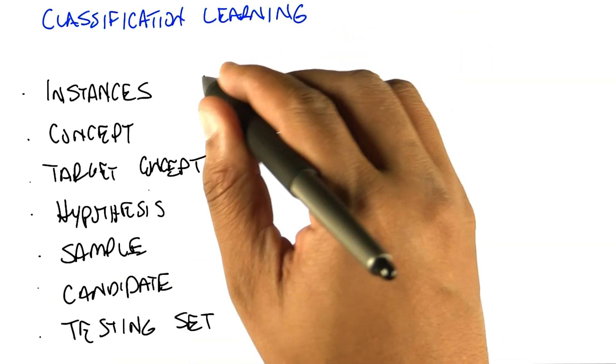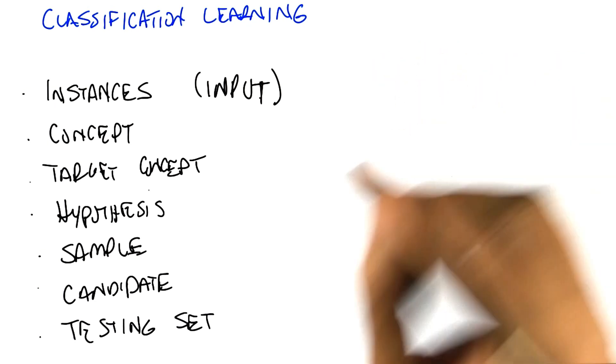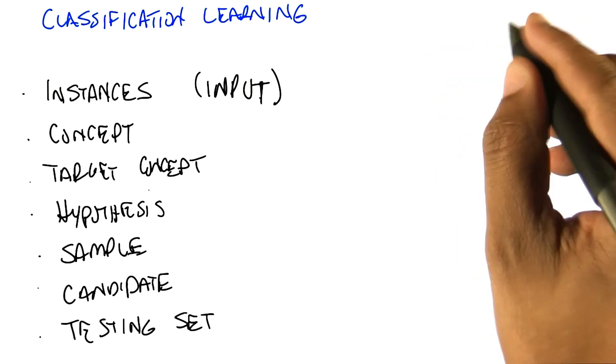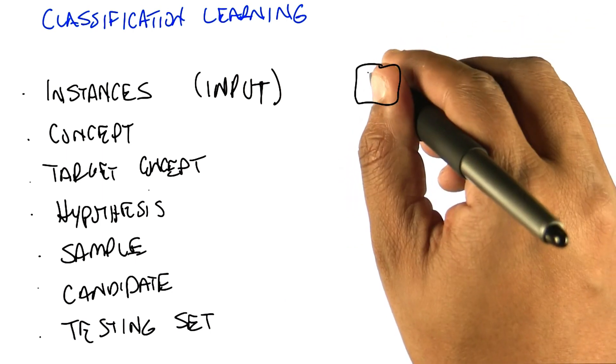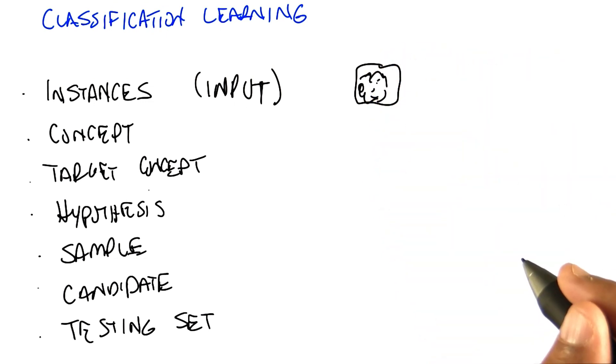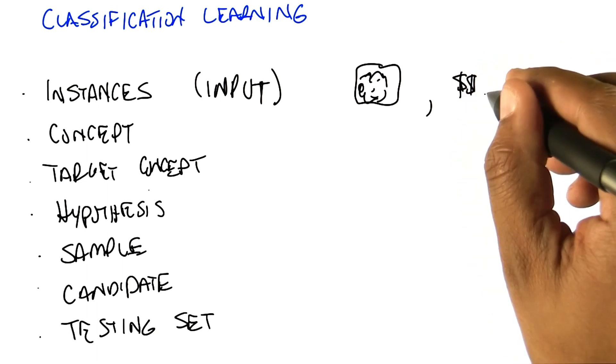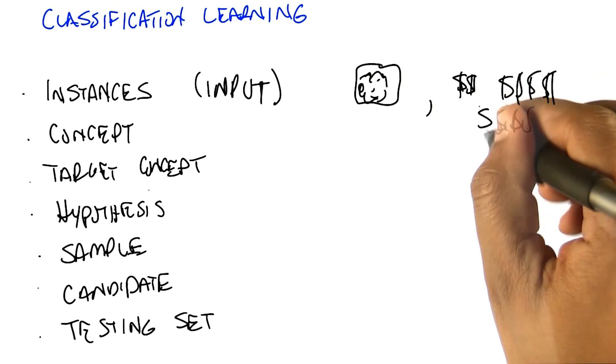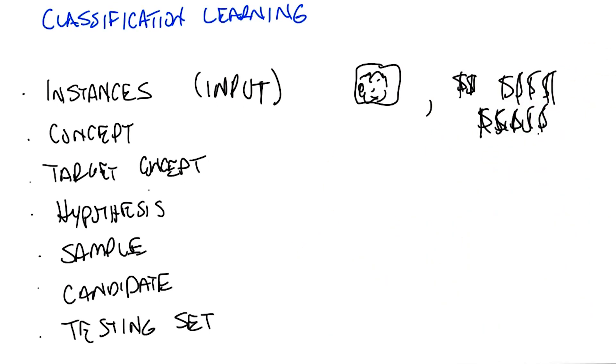So instances, or another way of thinking about them, is input. Those are vectors of values, of attributes that define whatever your input space is. They can be pictures and all the pixels that make up pictures like we've been doing so far. They can be credit score examples like how much money I make or how much money Michael makes, how much money I wish I made, so on and so forth. So whatever your input value is, whatever it is you're using to describe the input, whether it's pixels or discrete values, those are your instances, the set of things that you're looking at.